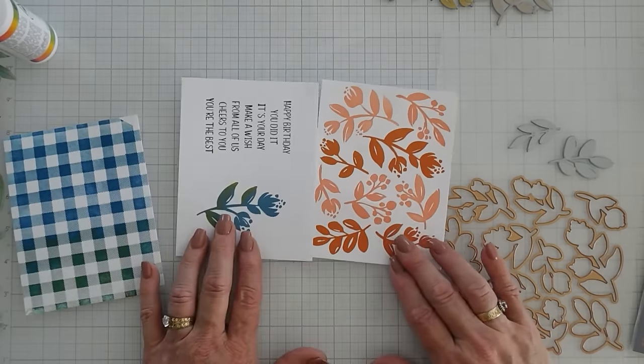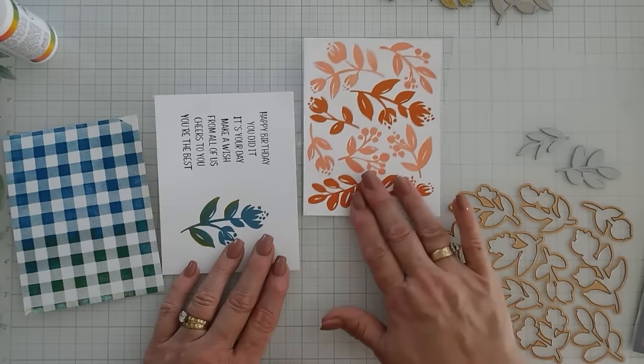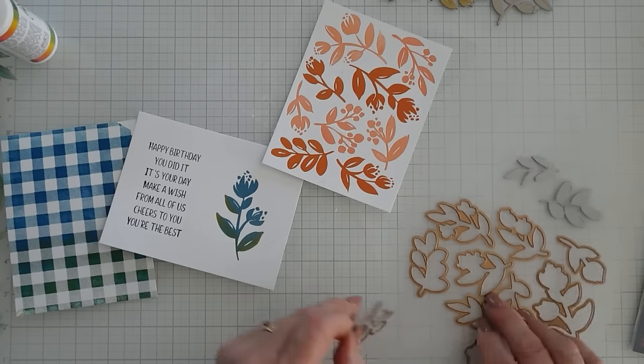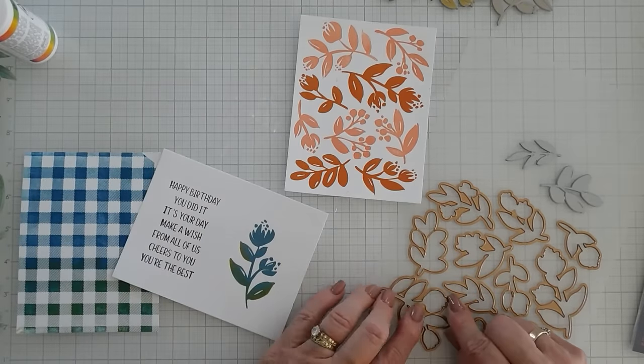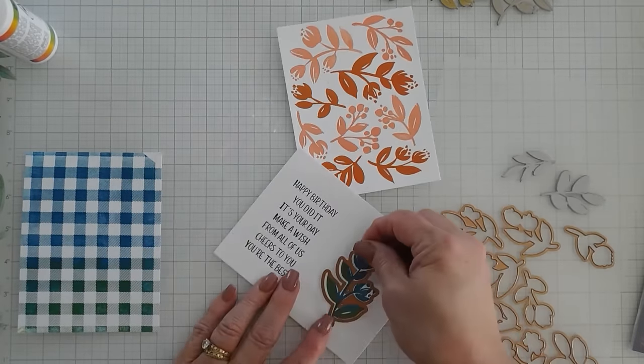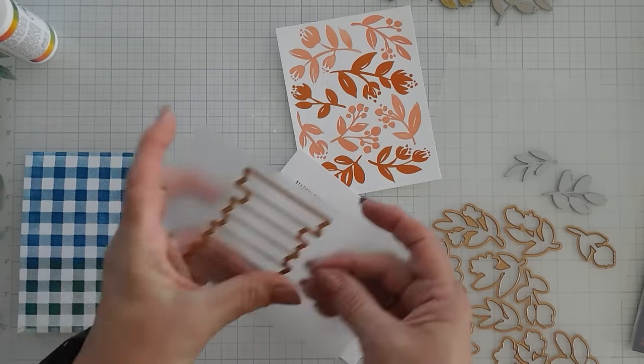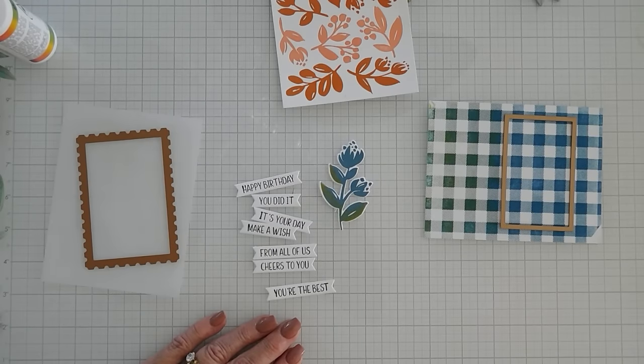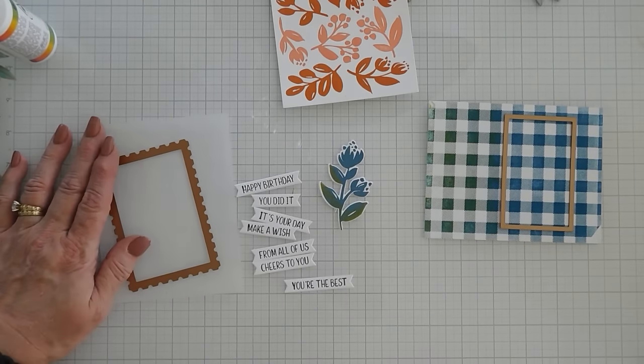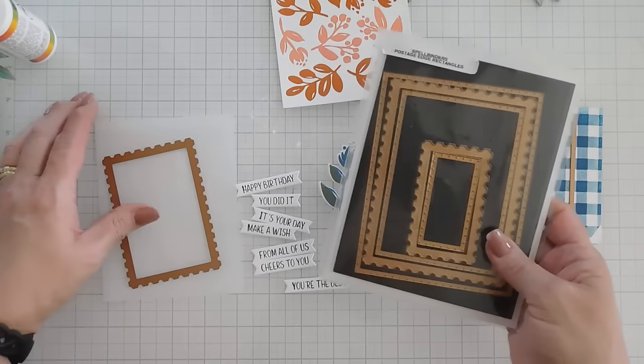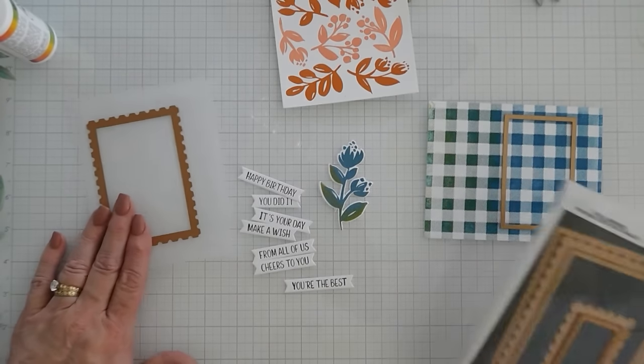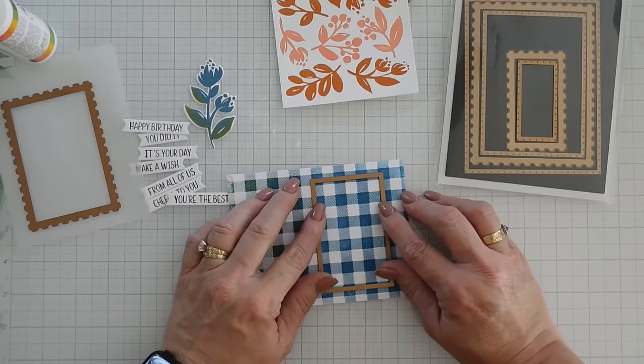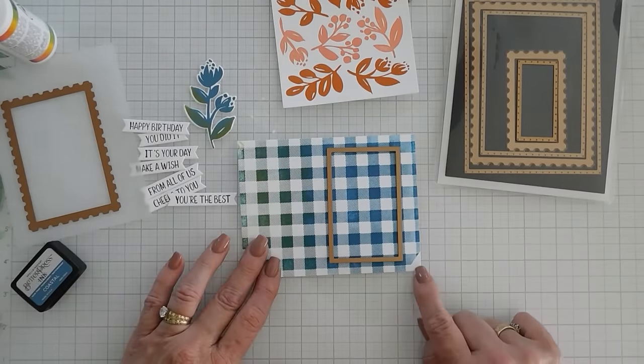Now, I'm going to go ahead and take the coordinating dies. And we're going to die cut out this flower here. We're going to die cut out this flower. And then we'll take this die and die cut out our greeting here. We have lots of greetings now. I think that's fabulous. I'm going to use my postage edge rectangle die set from Spellbinders. And I'm going to die cut out a vellum postage edge.